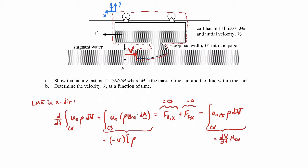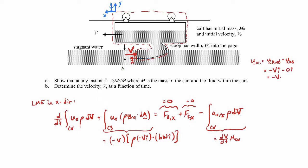For the mass flow rate terms: the density times the relative velocity gives minus v î, dotted with the area h times w in the positive î direction. The outward-pointing normal is in the positive x direction; the relative velocity is in the minus x direction. The relative velocity is just the fluid velocity minus the control surface velocity. Standing on the control volume, the surface has zero velocity, so the relative velocity is minus v î.